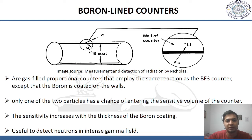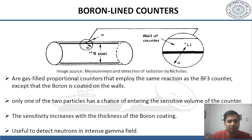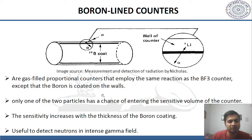The second type is boron-lined counters. These are also gas-filled proportional counters that employ the same reaction as the BF3 counter, except that the boron is coated on the walls of the detector. Only one of the two particles — lithium-7 or alpha — has a chance of entering the sensitive volume of the counter. The sensitivity increases with the thickness of the boron coating, and these are used to detect neutrons in intense gamma fields.